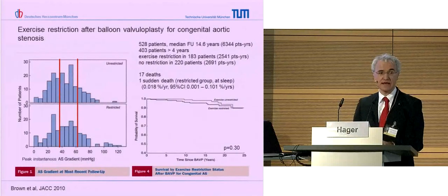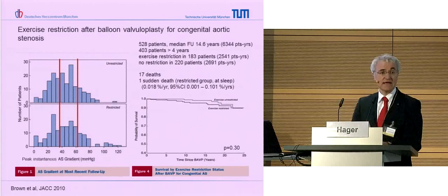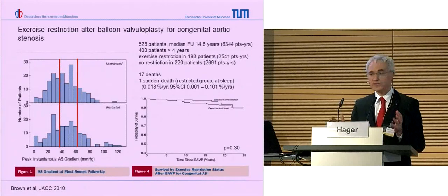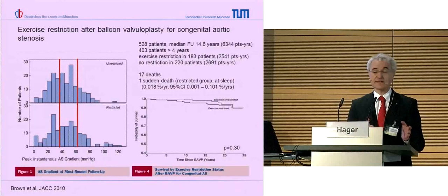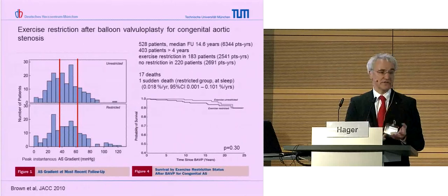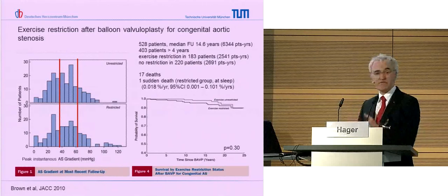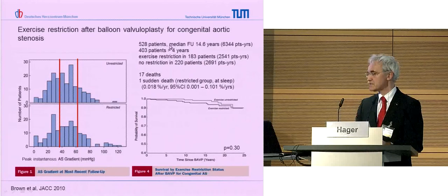A very recent study investigated the exercise restriction after balloon valvuloplasty for congenital aortic stenosis - the current thing we do all the time. We see a patient with aortic stenosis, we balloon them, and after ballooning we must give advice whether to restrict exercise capacity or not. They found that in their group, one half of consultants are very liberal concerning sport and the other half restrict everybody. This was a retrospective study with 528 patients, with a mean follow-up of 14 years.